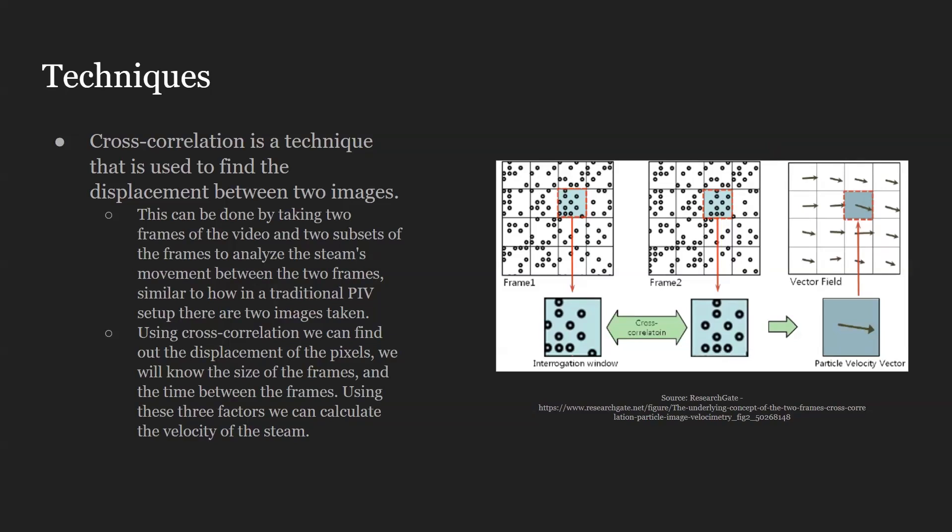We cross-correlated the two images to see what the displacement is, and then used that to find the velocity. Here's an example of how that would look.